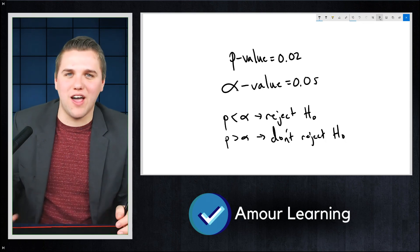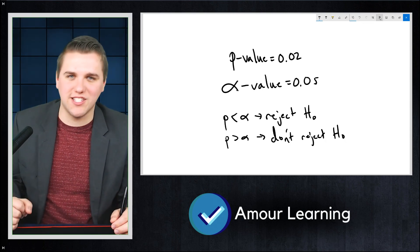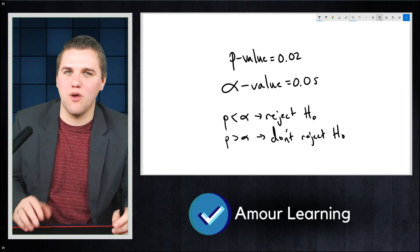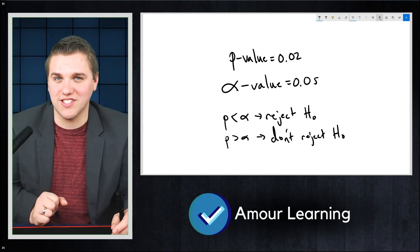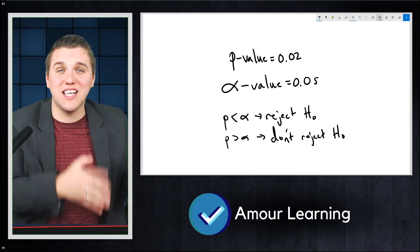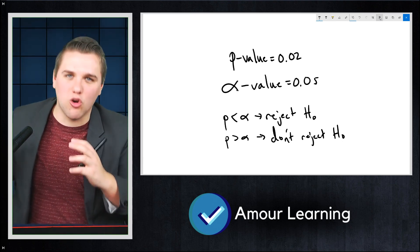Now, a lot of students ask me, what if the p-value is equal to the alpha value? And my response is this, it's not going to be. You're never going to find a scenario where the p-value and the alpha value are the same. So I just don't worry about it. Either the p-value is less than the alpha value or the p-value is greater than the alpha value.